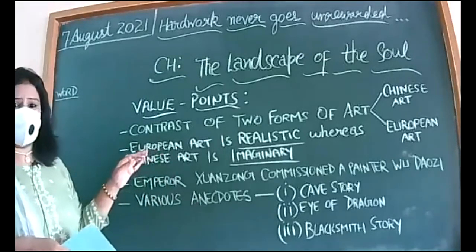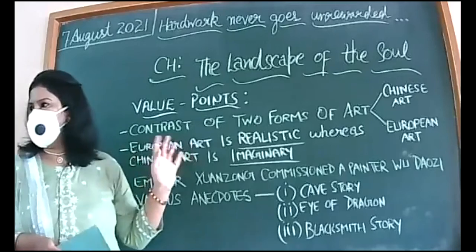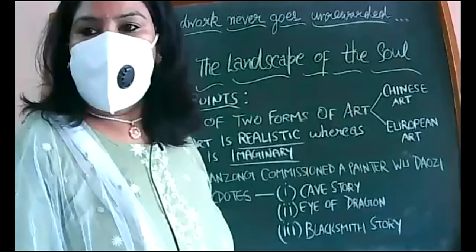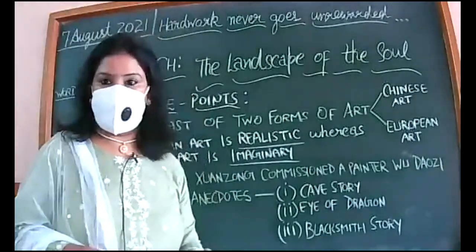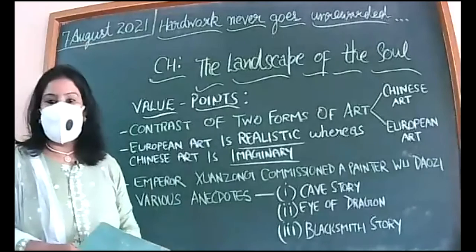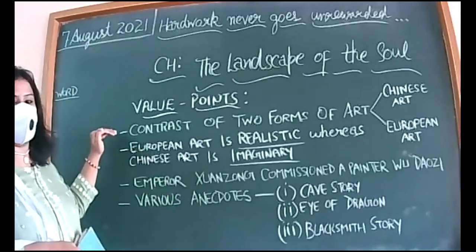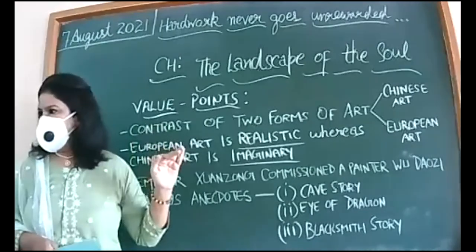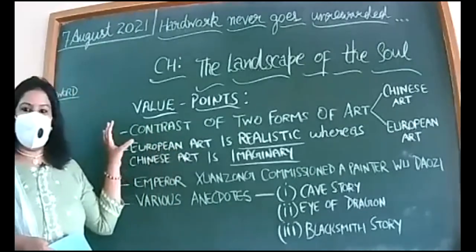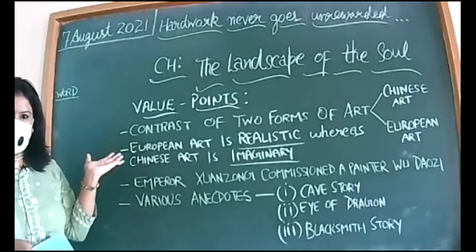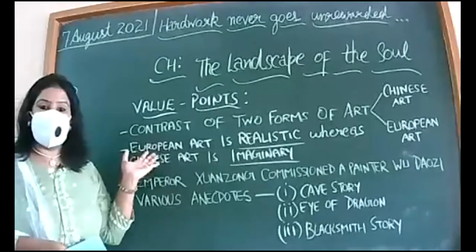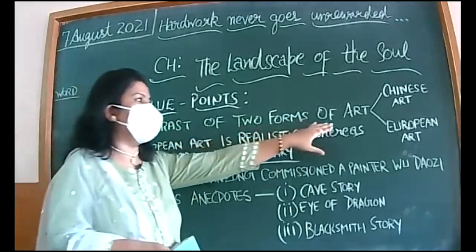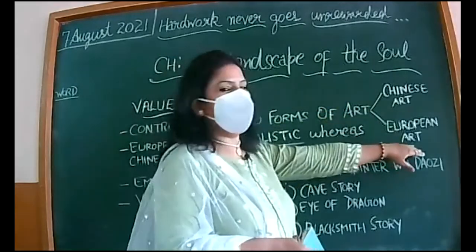Artistic people will definitely be able to relate with this chapter, and others will too, as you'll be reading about various art forms and paintings. The main theme of the chapter — the topic sentence — is the contrast of two forms of art: Chinese art and European art.